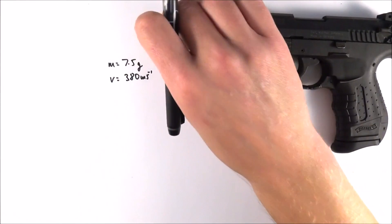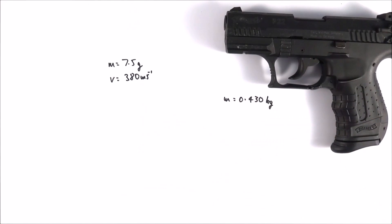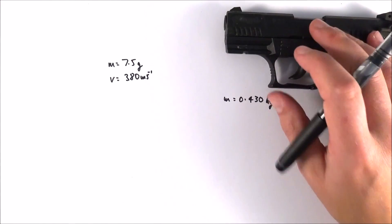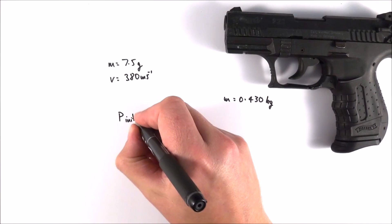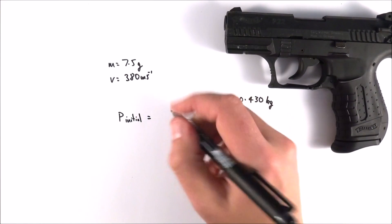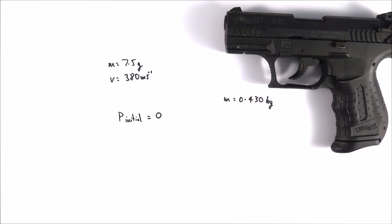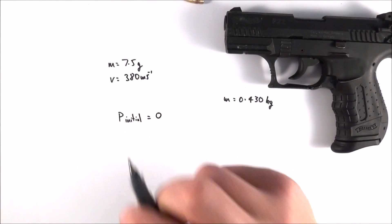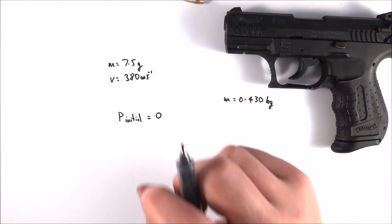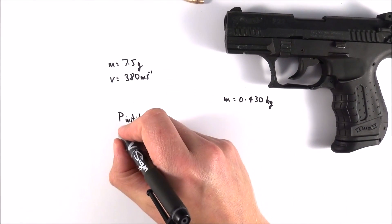Now before anything happens and the bullet is actually inside the weapon, this thing is stationary and therefore the initial momentum is equal to zero because nothing is moving. We know from the conservation of momentum that the momentum after the explosion is going to be the same as it was at the start, so we can also say then that the final momentum is also equal to zero.